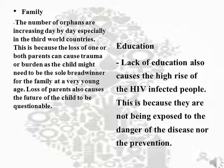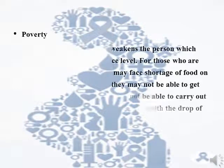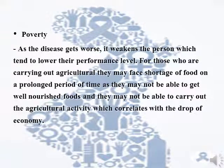Education is another part of the social effects of HIV. Lack of education increases the spread of HIV because people are not exposed to the dangers of the virus or how to prevent it. Poverty is also a social effect; as the virus worsens, a person's ability to work and earn tends to decline. For those carrying out agriculture, especially in third world countries, they may face prolonged food shortages and may not be able to obtain well-nourished food or carry out agricultural activity, which has wider economic consequences. Well-nourished food is important to keep them active longer, and poverty also prevents them from accessing a better healthcare system.